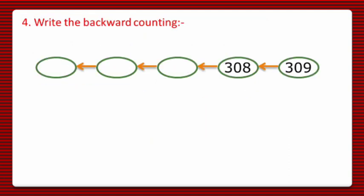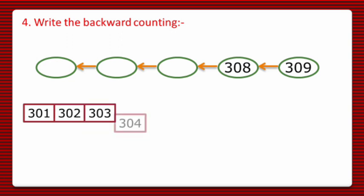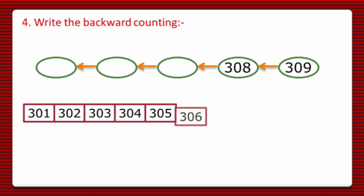Now let's move to question number 4. Write the backward counting. For this, we will consider the number line starting from 301 and continues as 301, 302, 303, 304, 305, 306, 307.